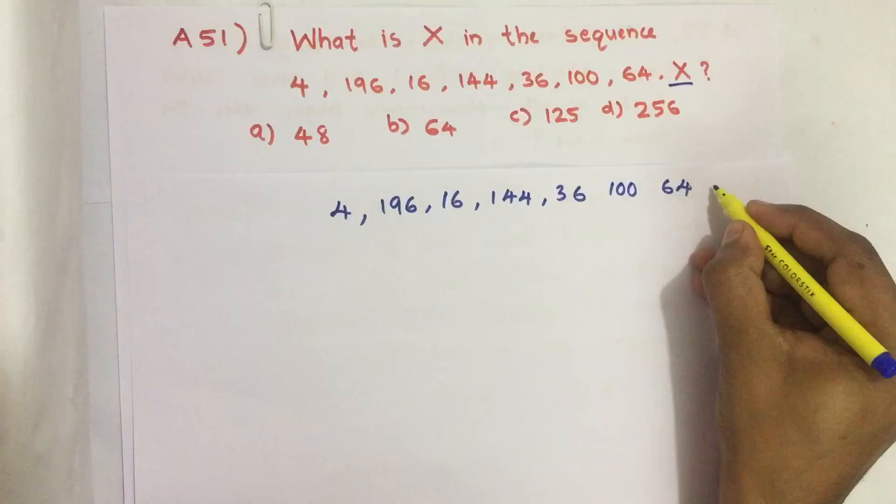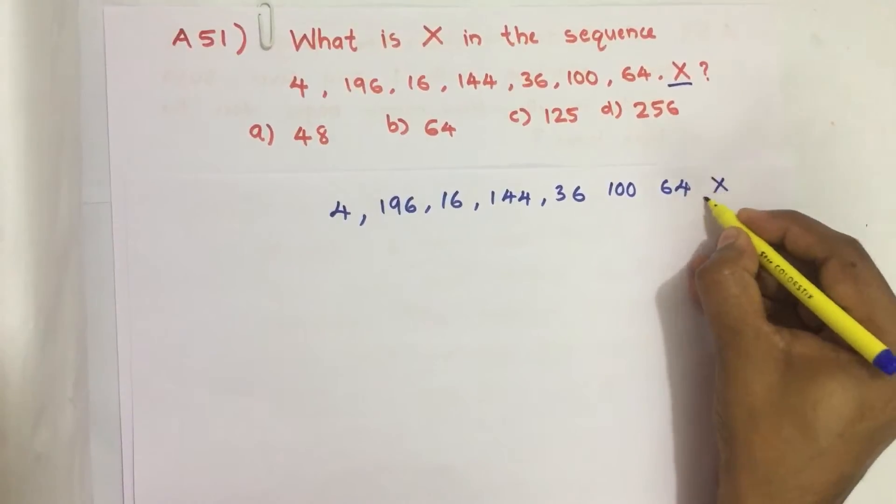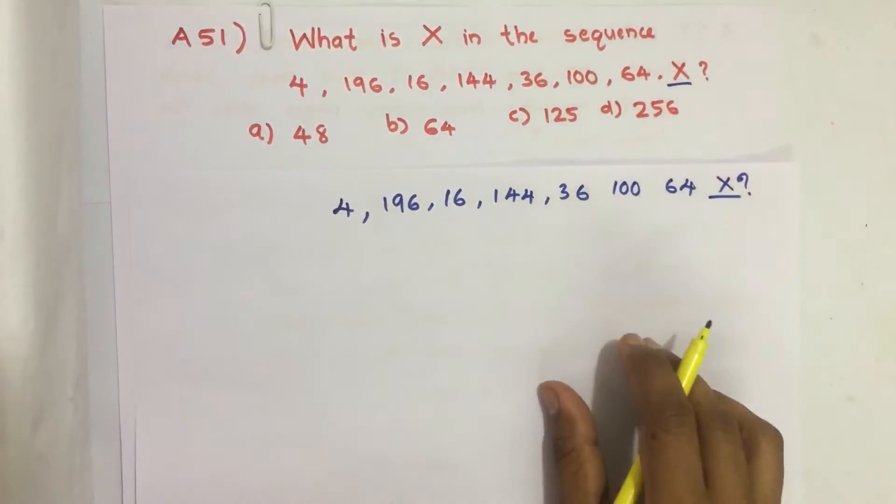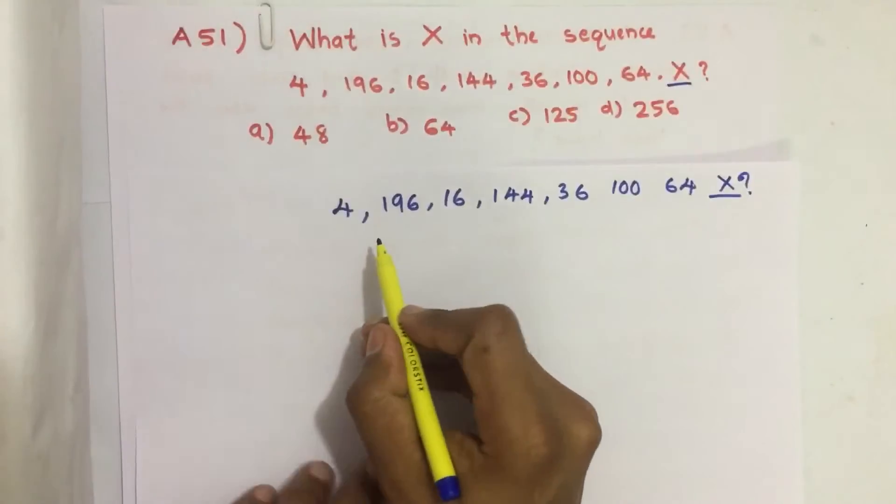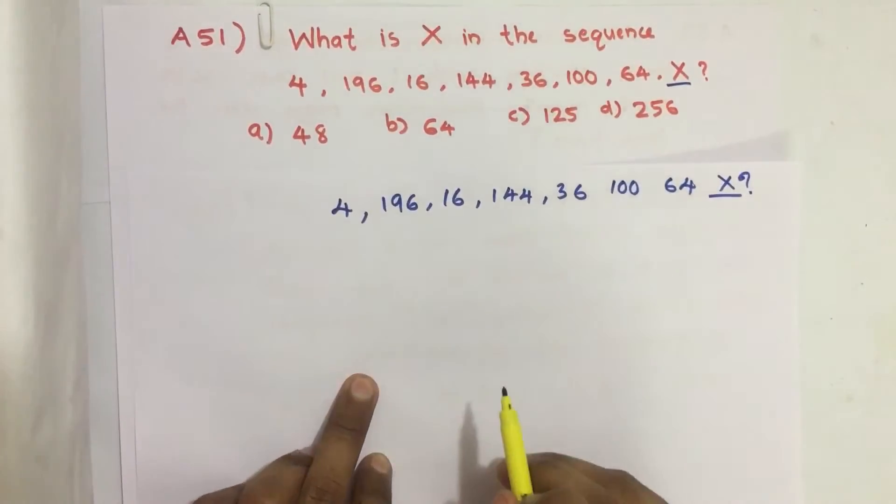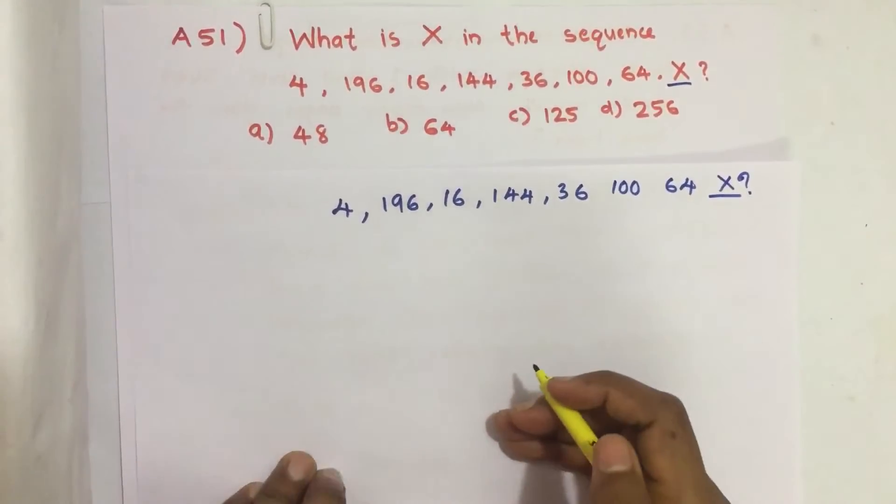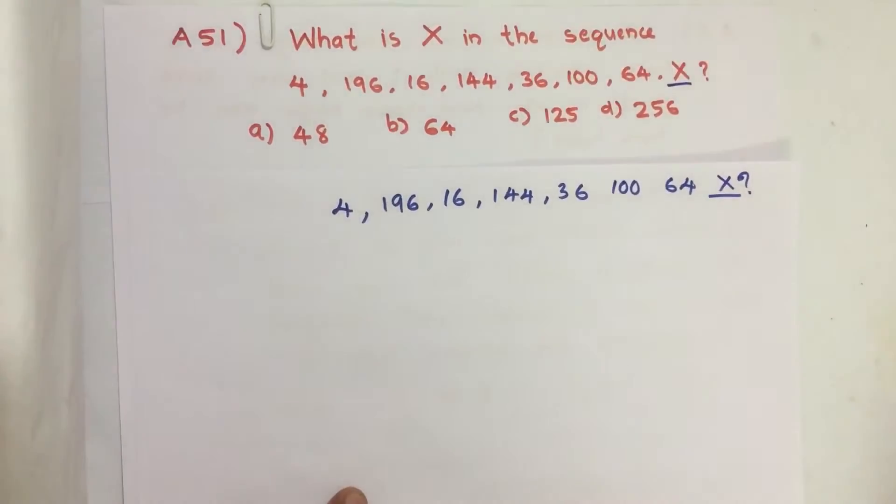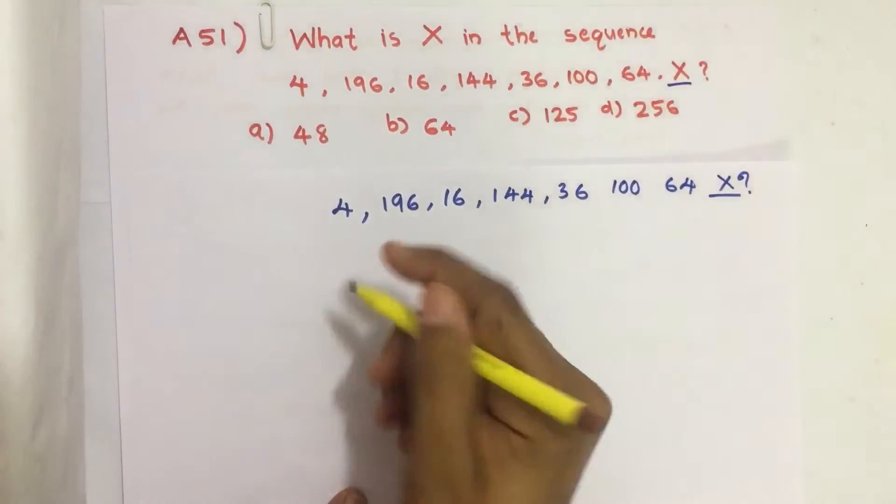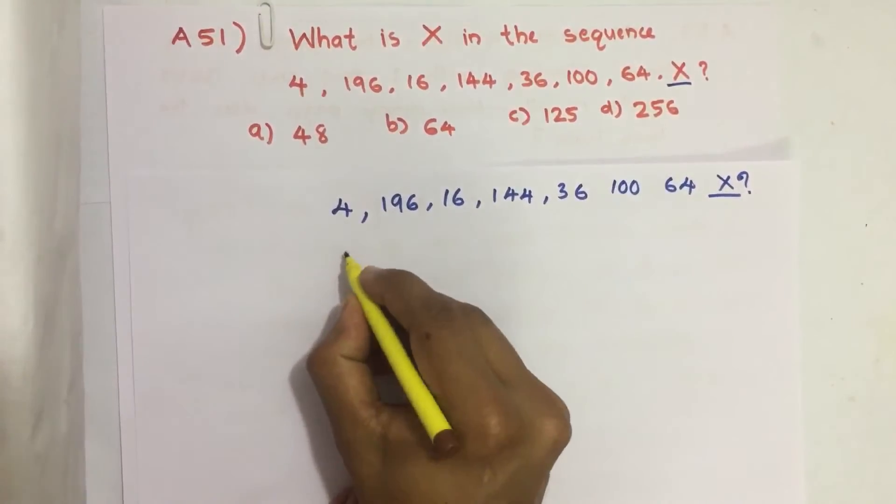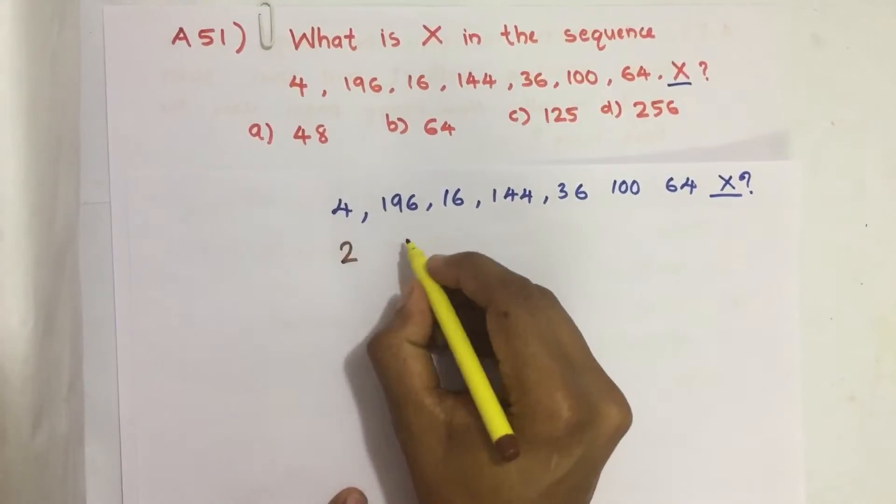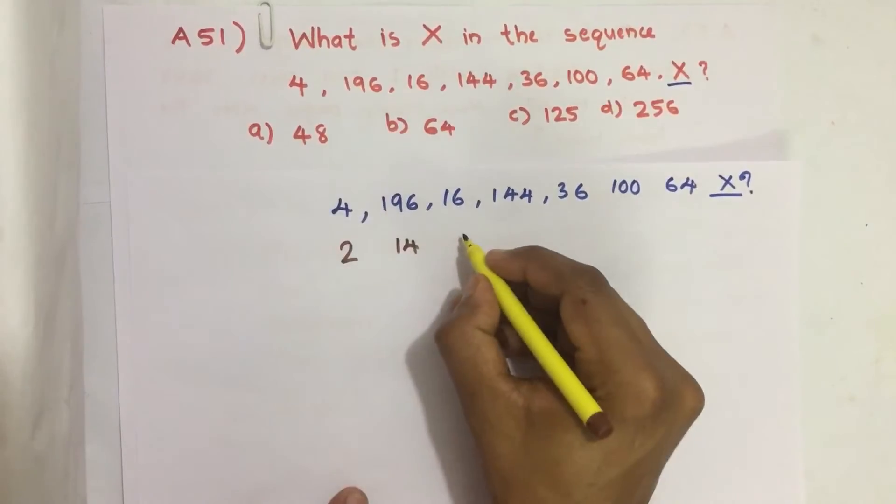What is X? We can see all these are perfect squares. So what are the square roots? Square root of 4 is 2, 196 is 14, 16 is 4, 144 is 12, 36 is 6.